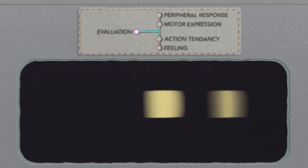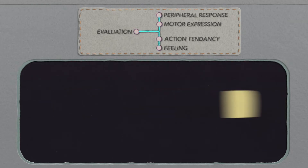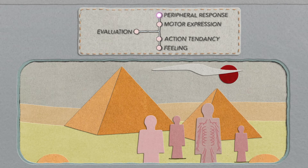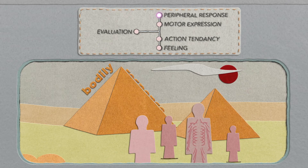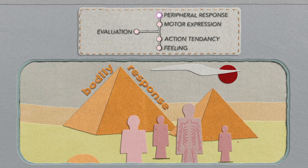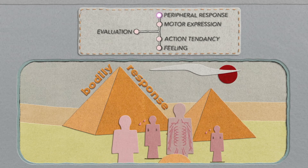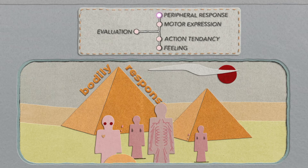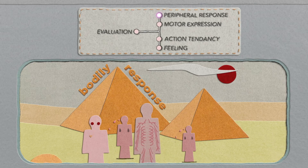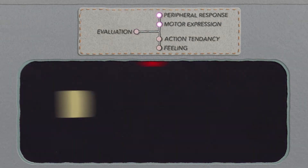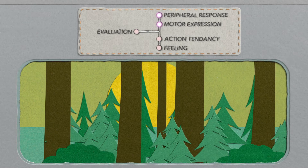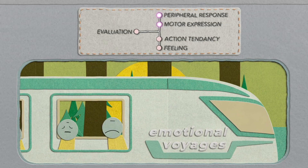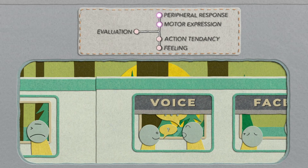The other four components of emotion represent the response to the first component. The peripheral component of emotion is our bodily response that takes place in our peripheral nervous system. Our peripheral nervous system is made up of nerves outside of our brain and our spinal cord. The motor expression component is how our muscles respond — our face, voice, and gestures.